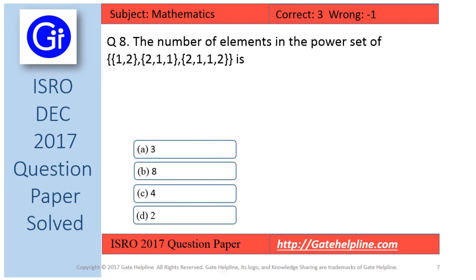So friends as per our discussion answer to this question is option D that is 2. So the number of elements in the power set of the given set is 2.